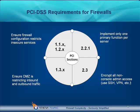Section 2.2.1 requires that you implement only one primary function per server. This means that you cannot implement web services and FTP and mail and DNS and so forth on one server in your DMZ. Instead, they have to be separated and provided by separate pieces of hardware. This can also be enforced by your firewall in that it will only allow one service to any given server. Section 2.3 requires that any console administrative access must be encrypted, either using SSH or using VPNs.